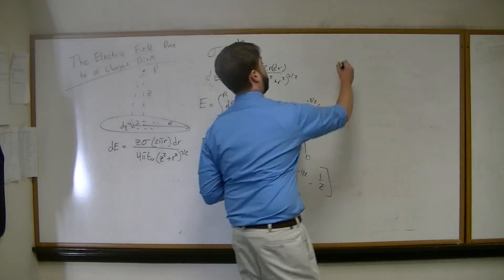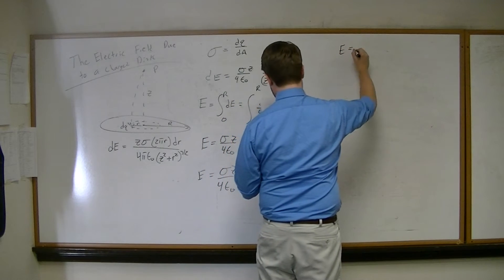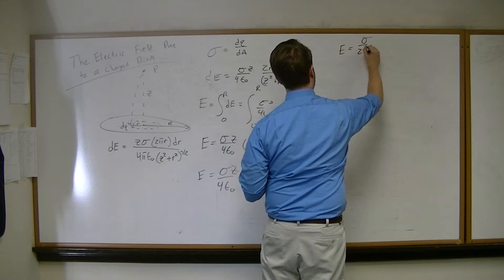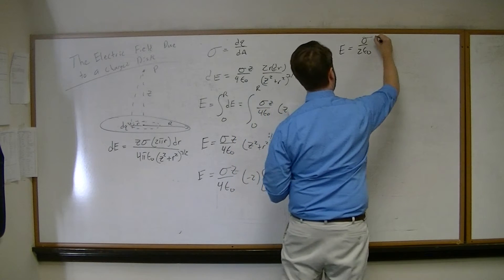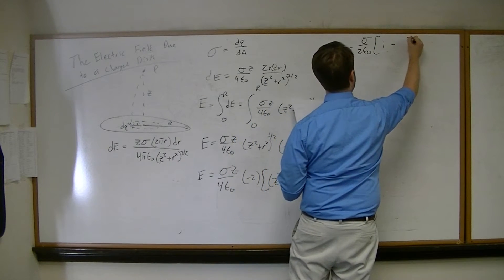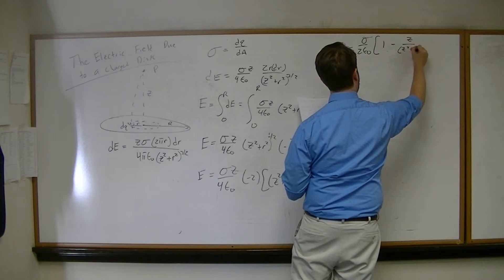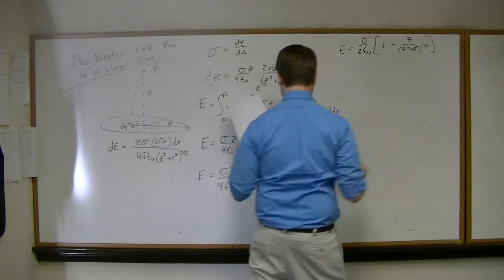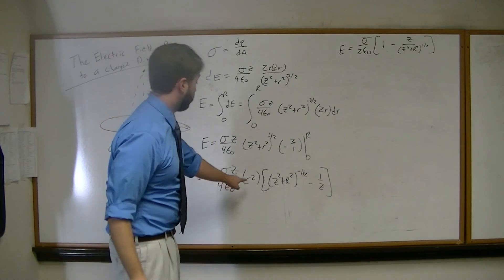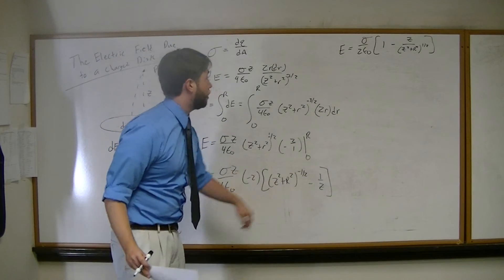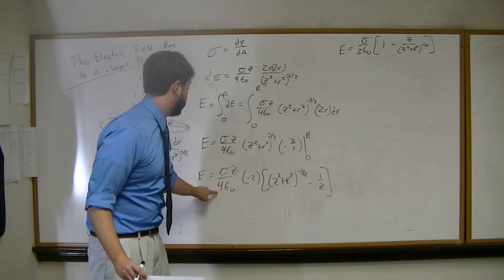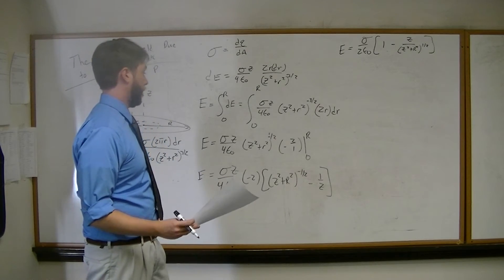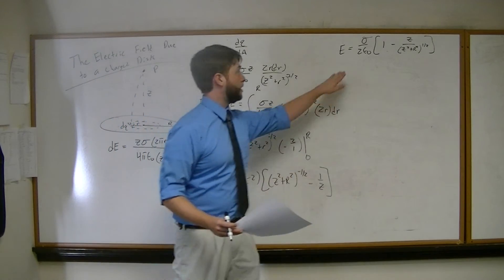And then finally, the electric field is equal to sigma over 2 epsilon naught 1 minus z over z squared plus r squared to the 1 half power. That's after we multiply this minus sign through everything. Notice that the 2 canceled out over here. And then they divided everything by z to get up here.